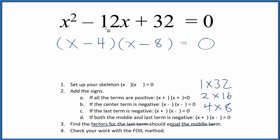We factored the equation x squared minus 12x plus 32. But we should check our work with the FOIL method.